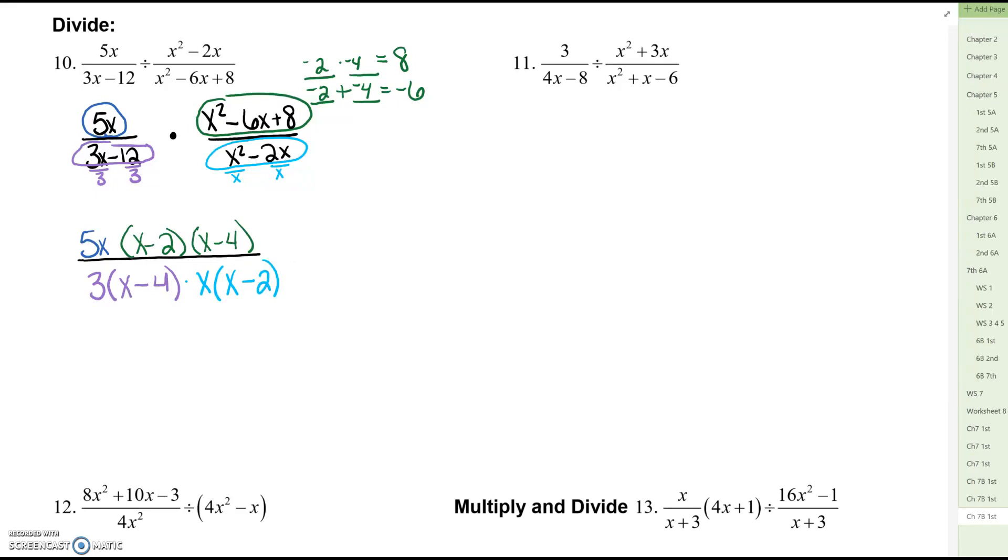Once everything is factored now we get to play the cancel game. So what cancels? x minus 2, x minus 4. Keep in mind that 5x really means 5 times x. So x on the top cancels x on the bottom. So what is left over that doesn't cancel? 5 over 3. Our answer is 5 thirds. And that is just a little bit simpler than the expression that we started with.